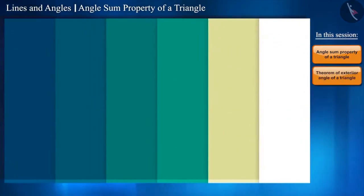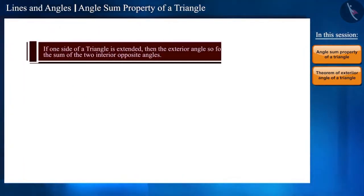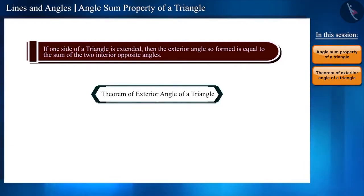Let us now move to the second theorem. This theorem states that if one side of a triangle is extended, then the exterior angle so formed is equal to the sum of the two interior opposite angles. Friends, this is also called the theorem of exterior angle of a triangle.